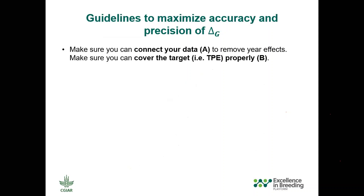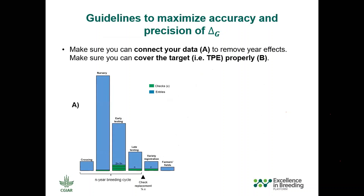So what are the guidelines that Excellence in Breeding is providing together with Crops to End Hunger to maximize accuracy, precision, and reduce cost? The most important recommendation is to maximize the connectivity — making sure that the adjusted means used for the calculation will remove location, year, and location-by-year effects as best as possible. That can only be achieved by having connectivity in the germplasm. That means, for example, having a good check strategy and a good check replacement strategy: fixing a certain percentage of checks at different stages, having common checks across all years, and replacing checks depending on how long the cycle time is.